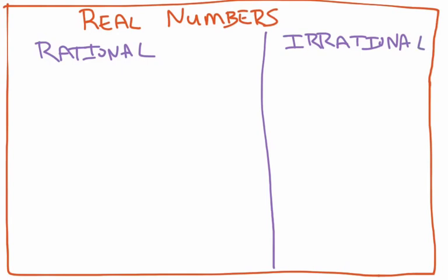We've spent time talking about rational and irrational numbers. Rational numbers are all the numbers that can be written as a fraction — that includes terminating decimals and repeating decimals, but it does not include decimals without a repeating pattern. Those would be irrational. Some examples of irrational numbers would be pi, which is 3.1415 and goes on forever, and the square root of any non-perfect square. For example, the square root of 7 is irrational, but the square root of 9 is not, because the square root of 9 equals exactly 3.